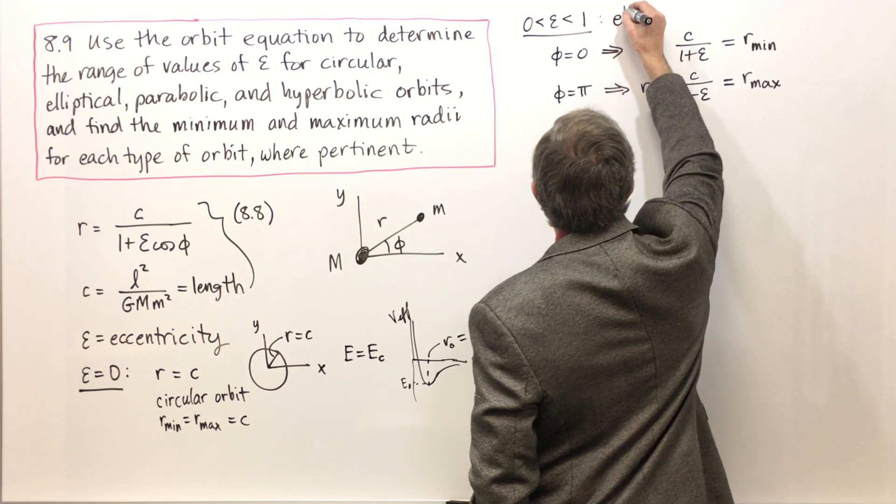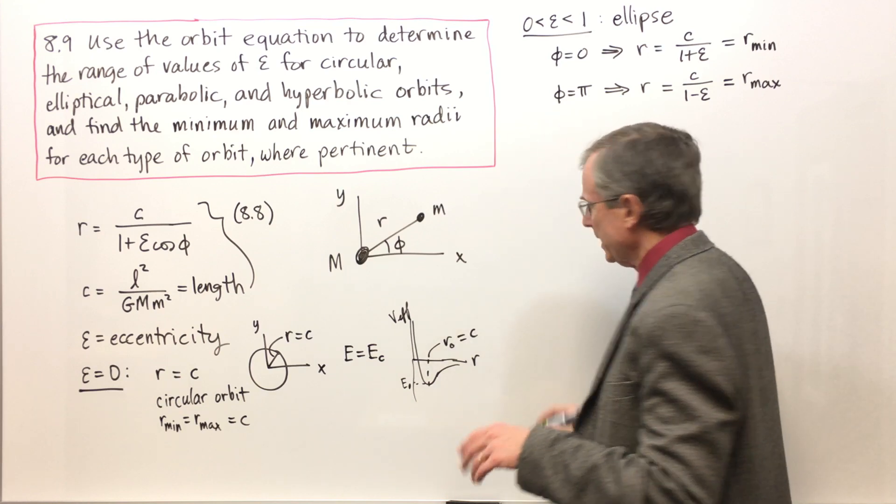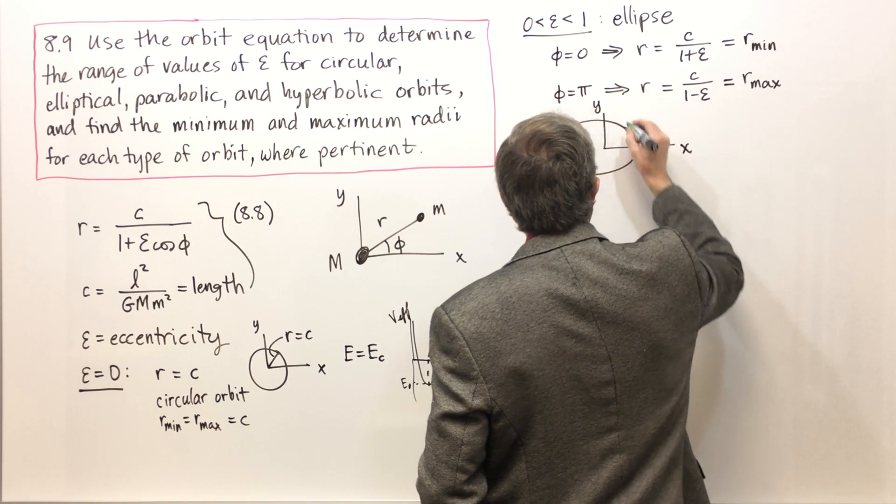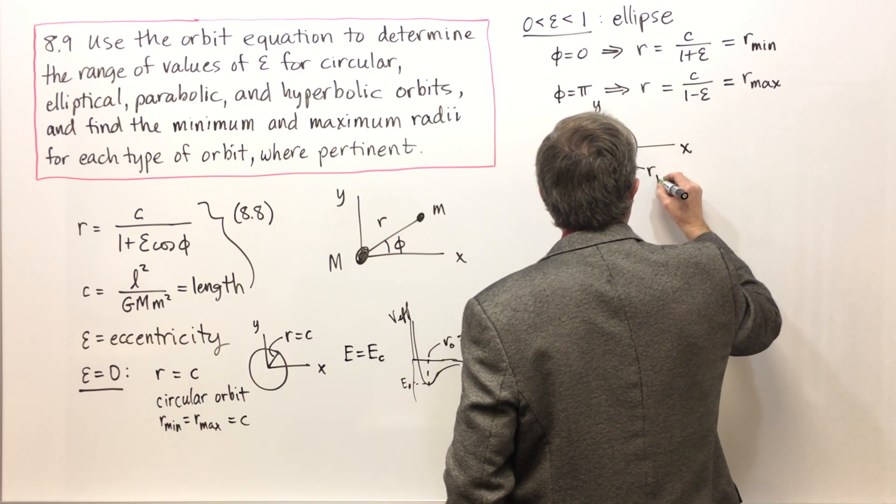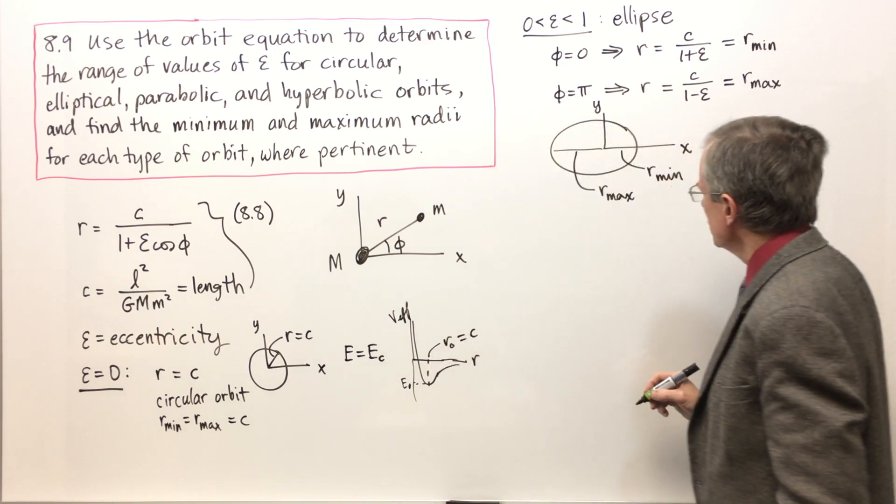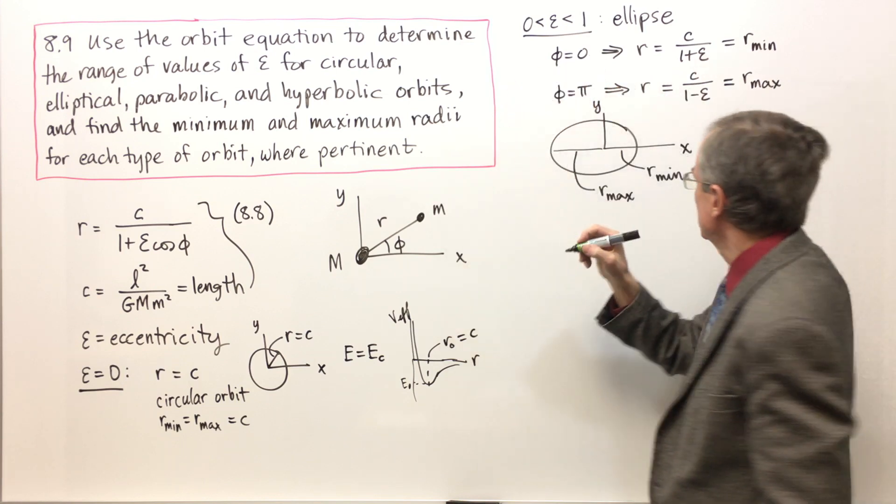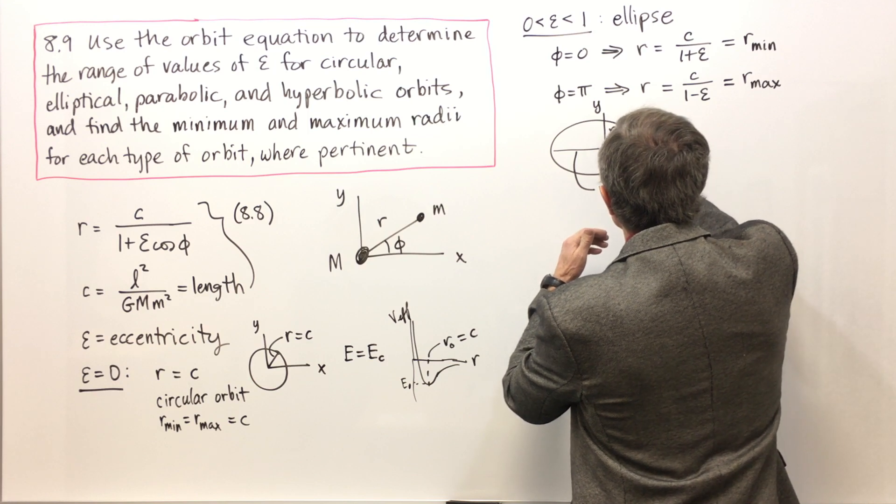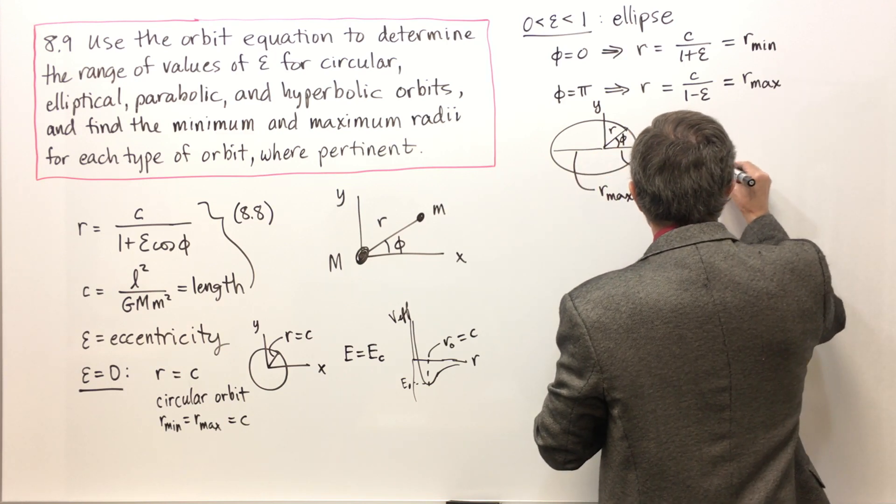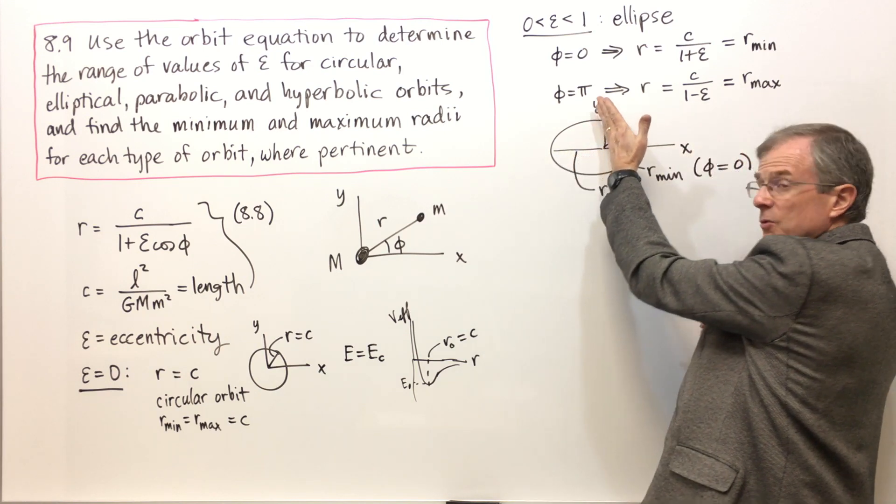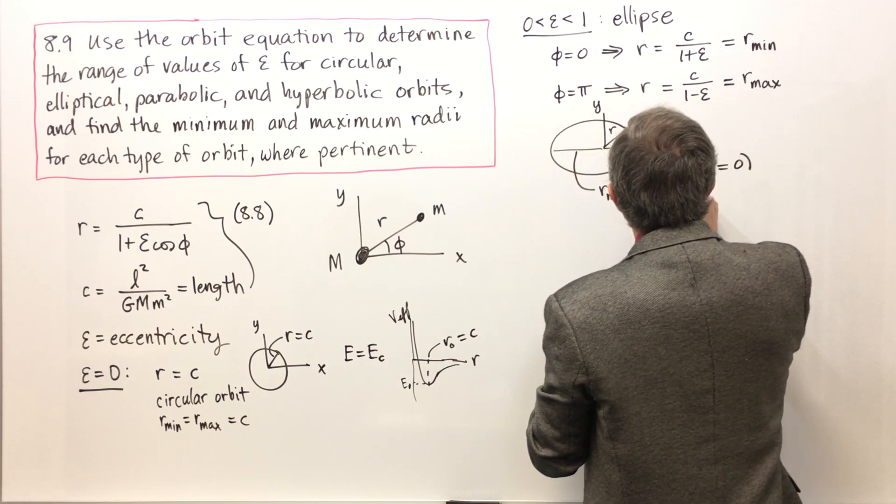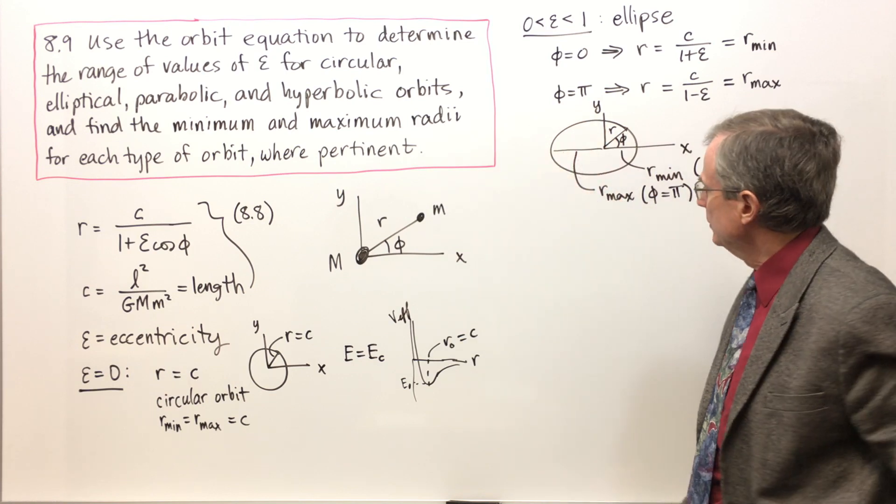This is an ellipse. R min occurs where phi equals zero. If we're talking about an R vector, where phi equals zero we're looking at the x-axis, and R min coincides with the x-axis where phi equals zero. R max is where phi is π, so we're on the negative x-axis and that's where we hit that maximum R.